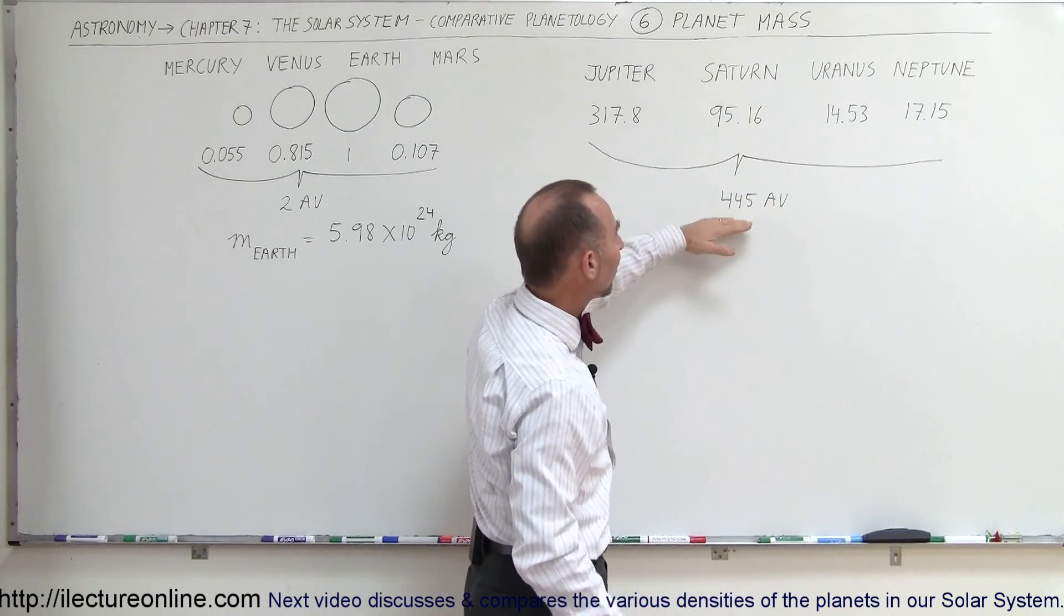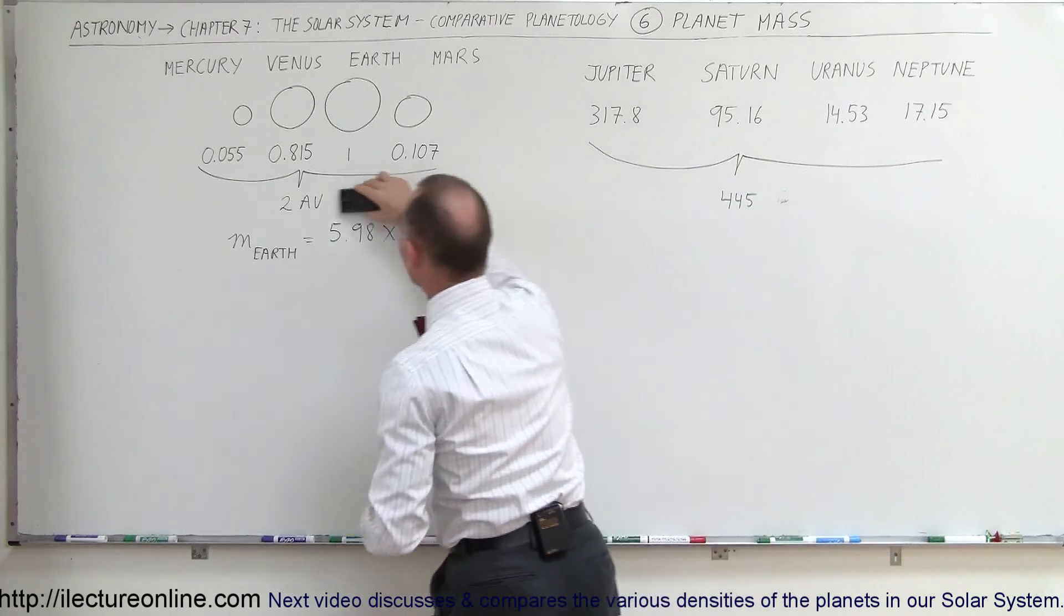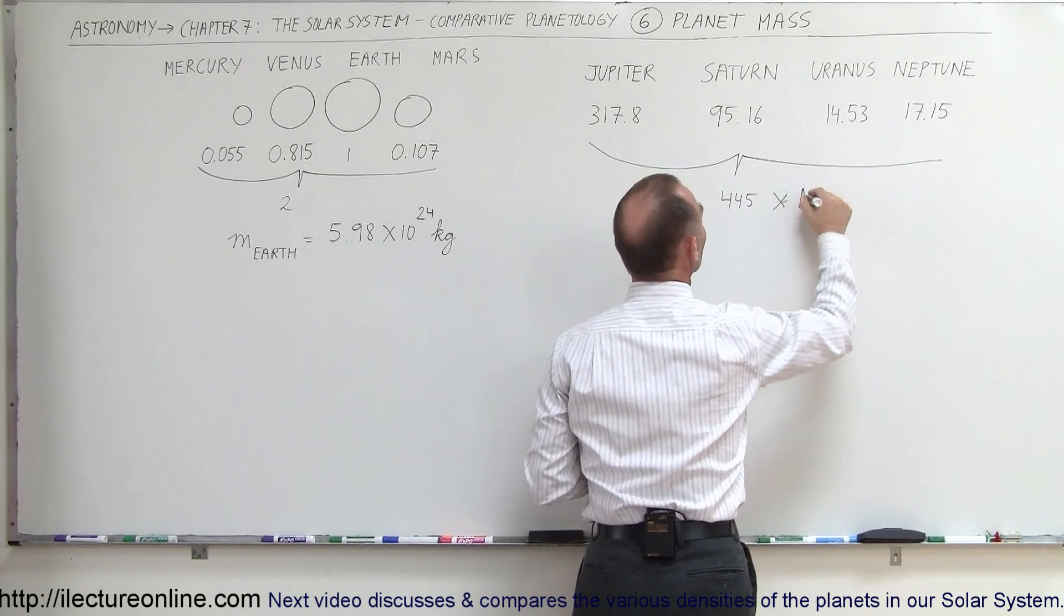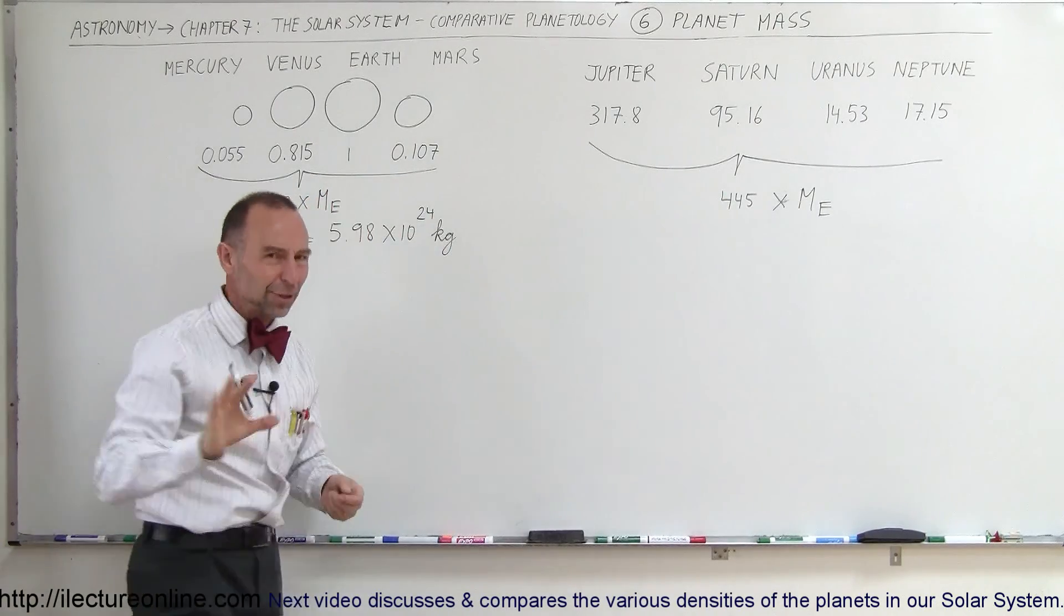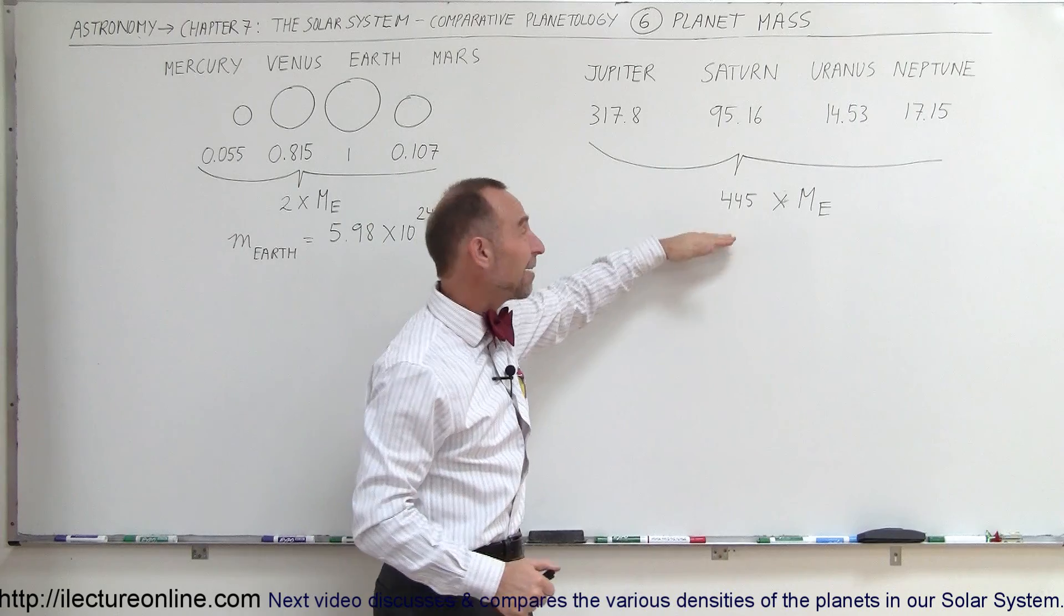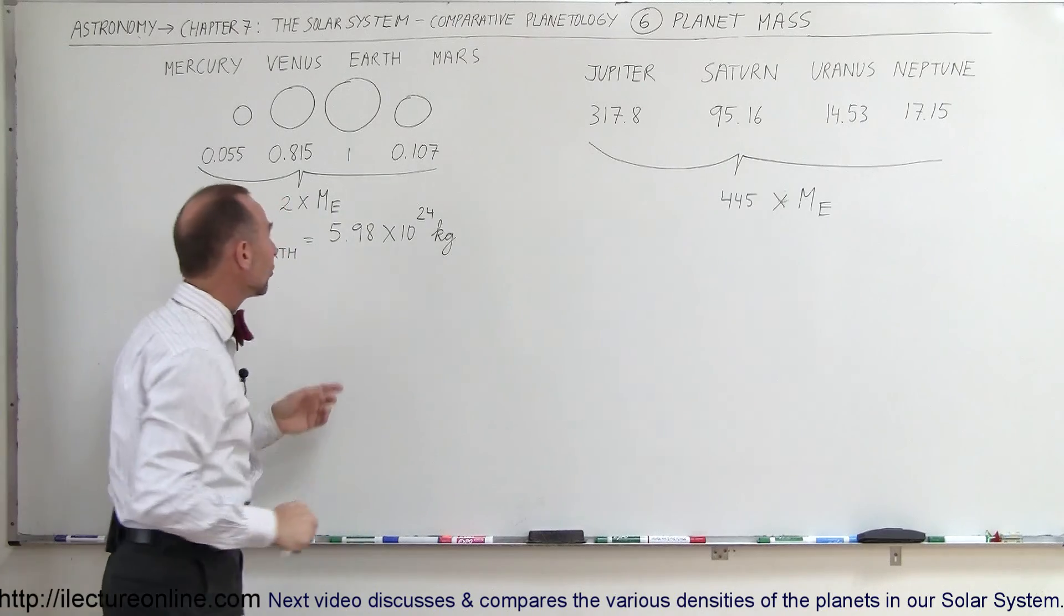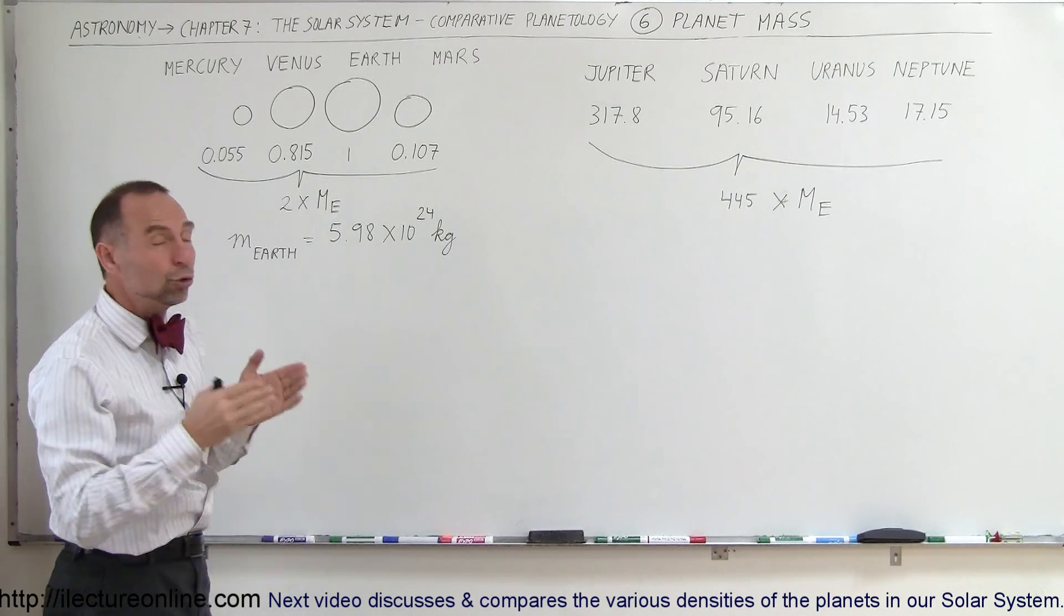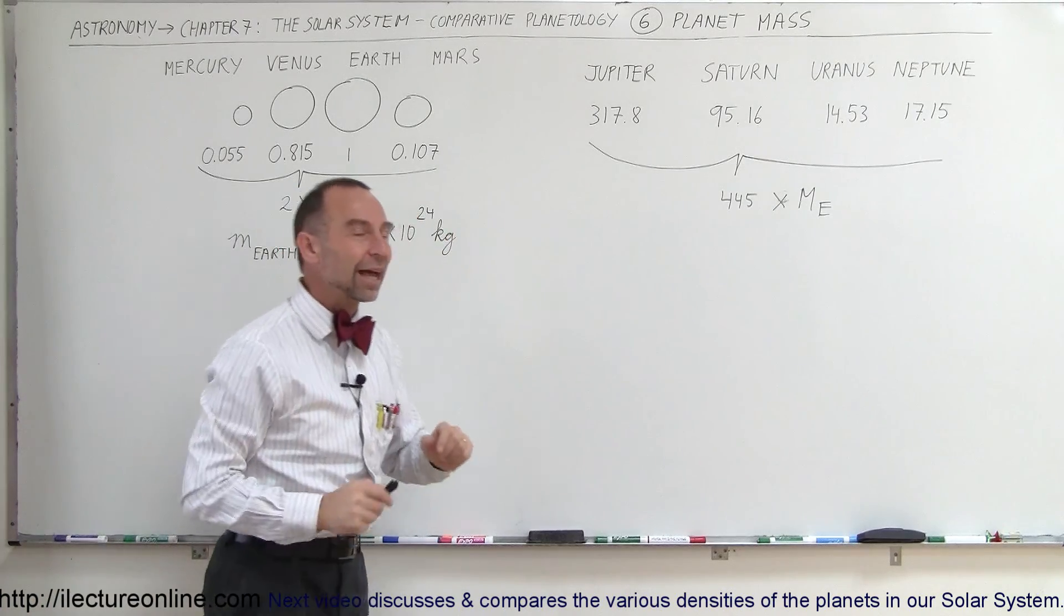Combined, the four gas planets have a combined mass of 445 times the mass of the Earth. When you combine the mass of the four terrestrial planets, you only have about 2 times the mass of the Earth. So you can see that the four gas planets combined have more than 200 times the mass of the four terrestrial planets. The vast majority of the mass is way out there with the gas planets.